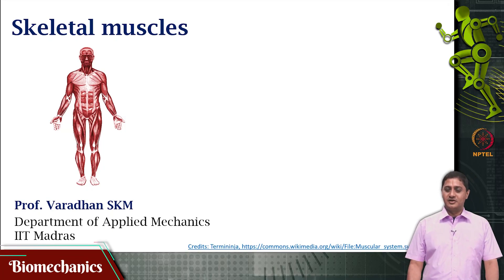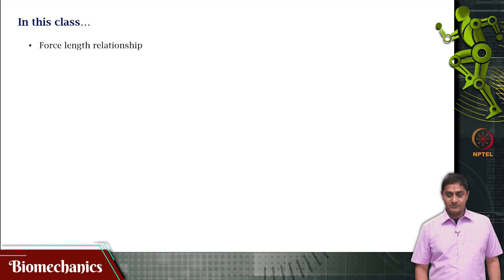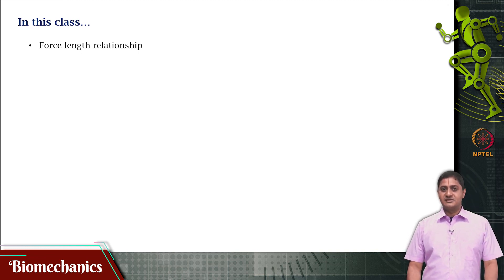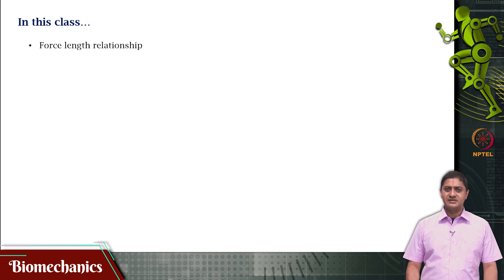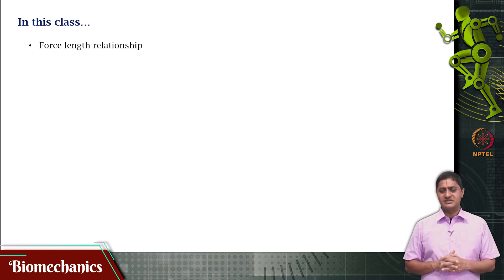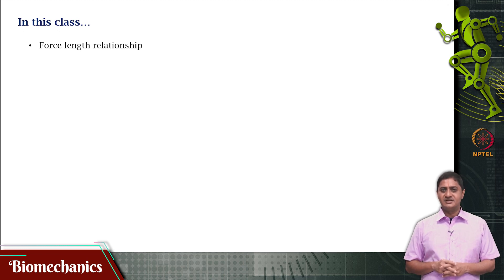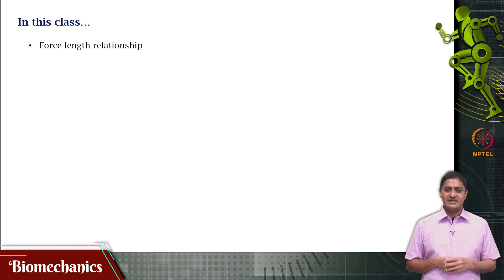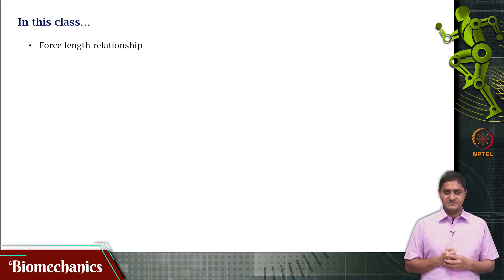Welcome to this video on biomechanics. We have been looking at skeletal muscles and how force is developed in a sarcomere — the sliding filament theory or cross-bridge theory. We explained how force is developed in the smallest functional unit of the muscle, the sarcomere. Cross bridges between the thick myosin fibers and the thin actin filaments are formed in the presence of calcium and ATP, and the myosin then undergoes a conformational change and pulls the actin.